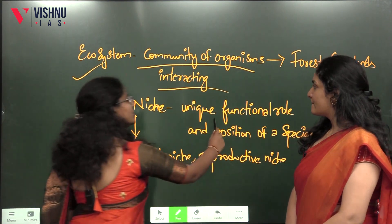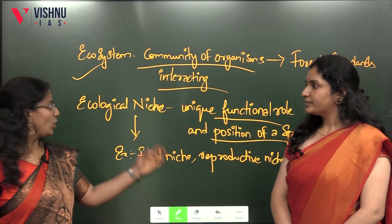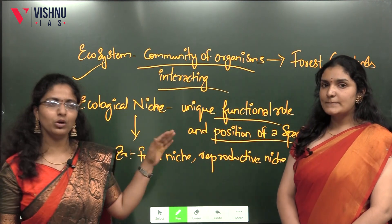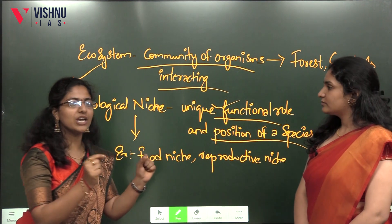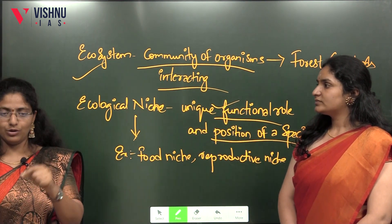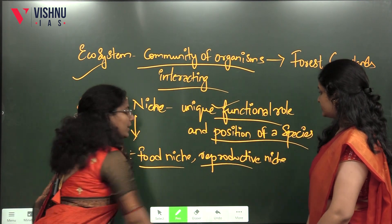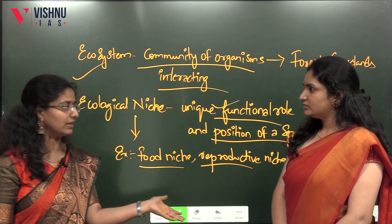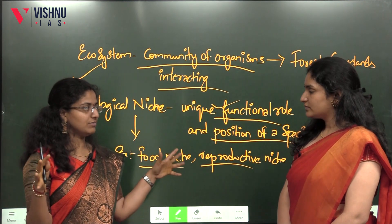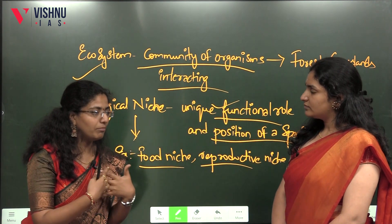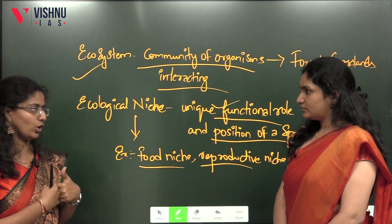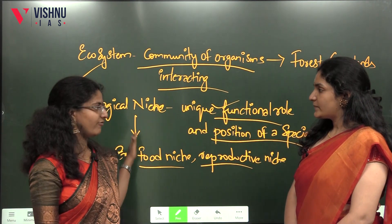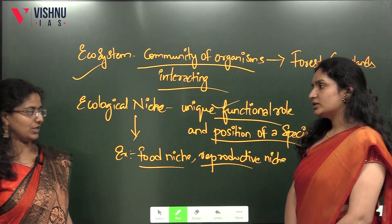Ecological niche is the unique functional role and position of a species within an ecosystem. It describes what function an organism performs in a particular space. For example, a food niche could involve a tiger hunting deer — the deer serves as food for many organisms. When ecological niches overlap, competition arises between organisms. In essence, the ecological niche is the functional platform at which an organism operates within an ecosystem.